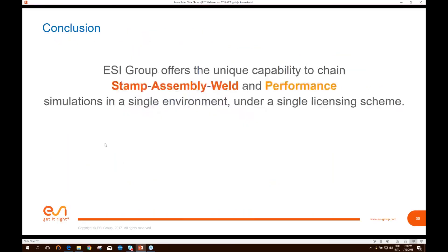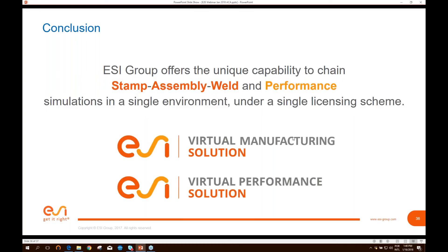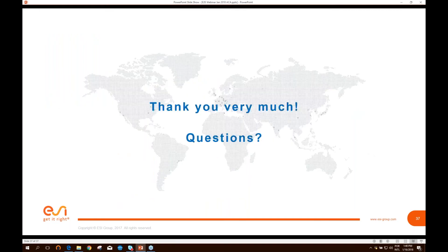In conclusion, at ESI we have the capability to chain stamping, assembly, welding, and performance simulations in a single environment and even a single licensing scheme. We have our Virtual Manufacturing Solution and Virtual Performance Solution, which share the same licensing and the same interface. That's what I wanted to present to you today, and I'm very open to any questions you might have.